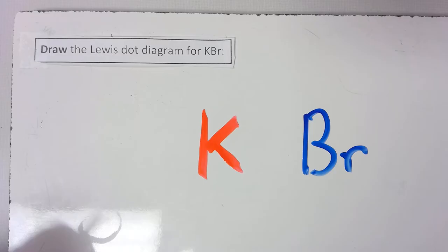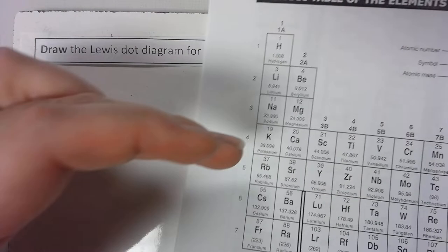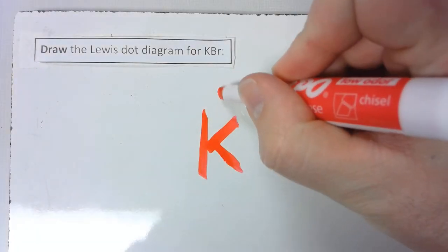The second thing you want to do is assign valence electrons to these elements. So K, potassium, has one valence electron. We'll put them right here.